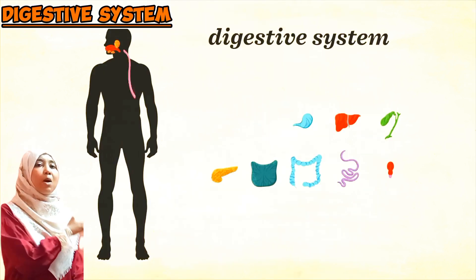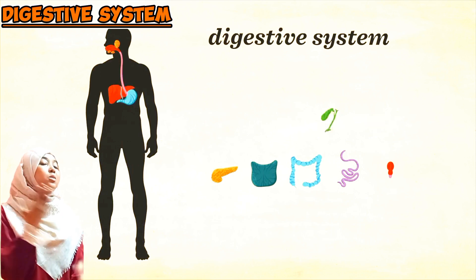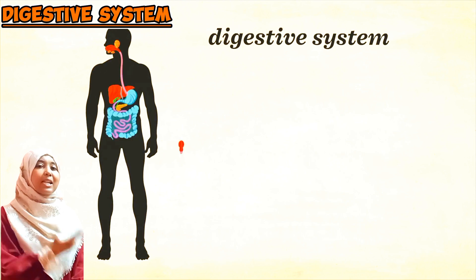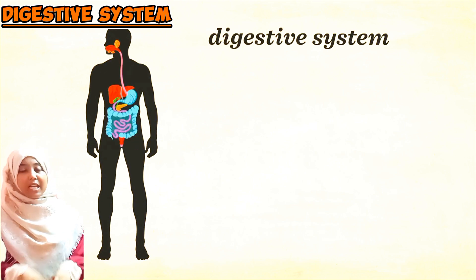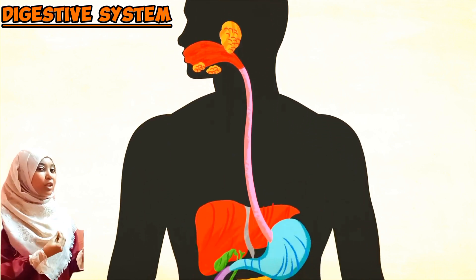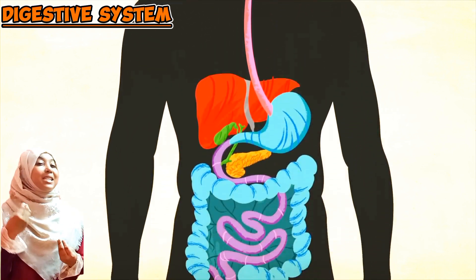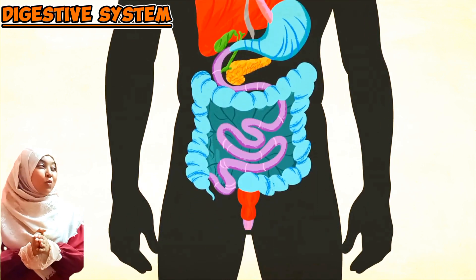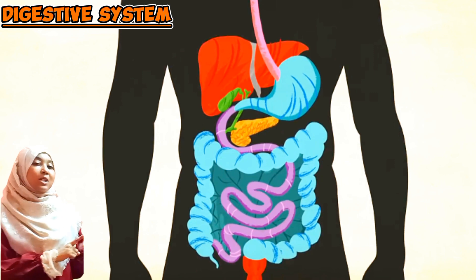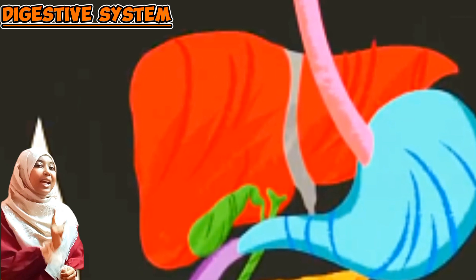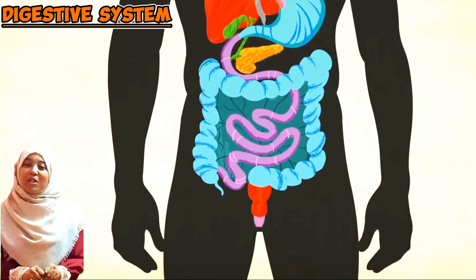The digestive organs include the mouth, the esophagus, the stomach, the small intestine consisting of the duodenum and the ileum, the large intestine, the rectum, and lastly the anus. We will focus on each of these organs — their activities, their adaptations — and also the associated organs, the liver and the pancreas, which play a huge role in digestion.